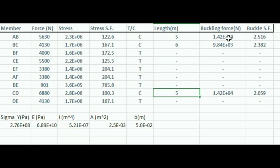Next, you can calculate the force required for buckling in each member. This is given by the formula π² times E times I divided by the length squared. This will give us the force in newtons required to buckle the members.